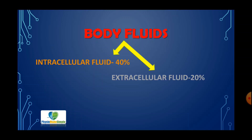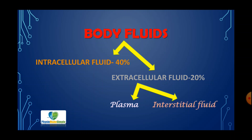Body fluids are classified into two parts: intracellular fluid and extracellular fluid. Intracellular fluid refers to the fluid inside the cell — the cell being the basic structure of tissues and organs. Of the 60% body fluid, intracellular fluid forms almost 40% and the remaining 20% forms the extracellular fluid.